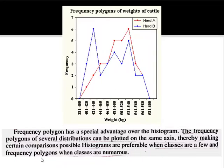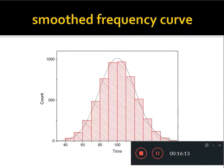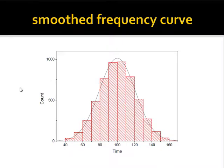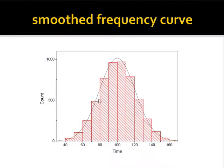The third type of frequency distribution graph is a smoothed frequency curve, which can be drawn through the various points of the polygon. The curve is drawn freehand such that the area included under the curve is approximately the same as that of the polygon. This eliminates any accidental variations that might be present in the data — hence the use of frequency curves instead of polygons.